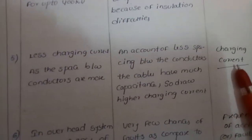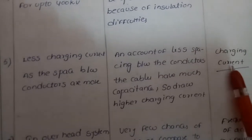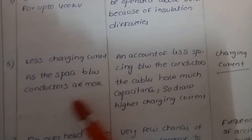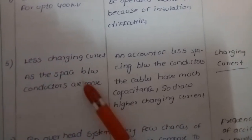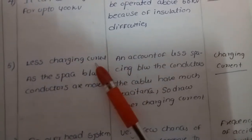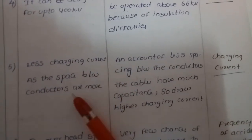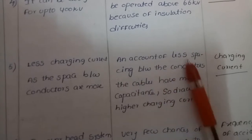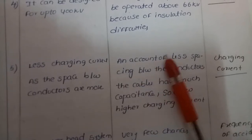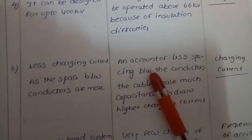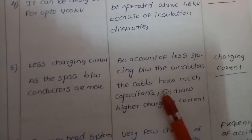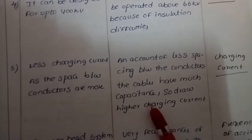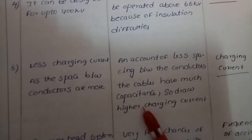Another aspect is charging current. In overhead systems, the spacing between conductors is more, so charging currents are less. In underground systems, due to closer spacing in the cable channel, the cables have much higher capacitance and therefore draw a high charging current.